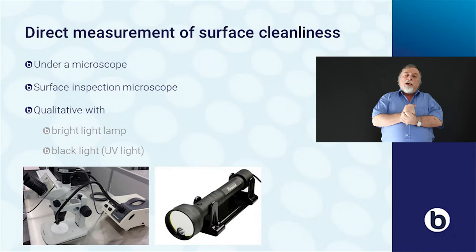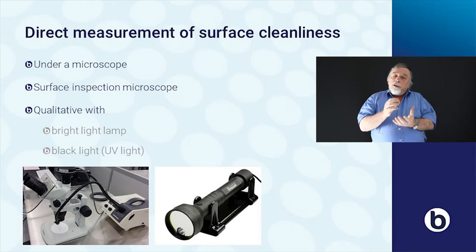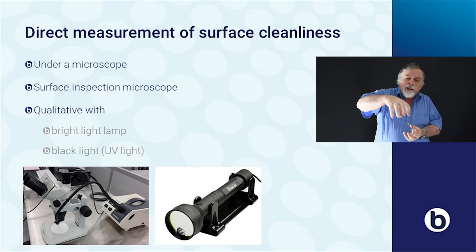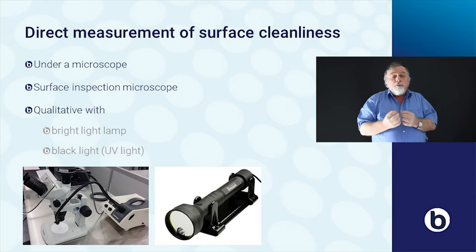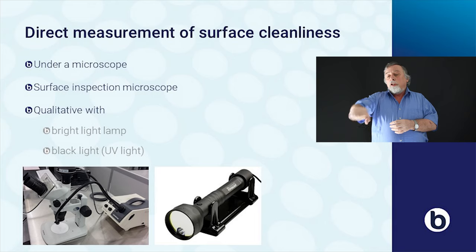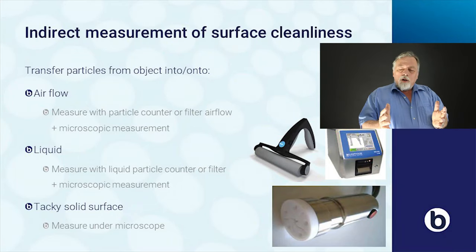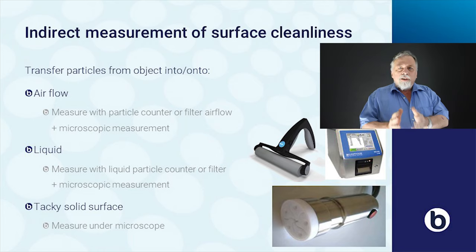There are different instruments to measure surface cleanliness directly. You can do this under a microscope or a surface inspection microscope, which you bring onto a surface, but mostly they measure only a very small area. You can also do it qualitatively using a bright light or UV light, which shows you the particles on the surface. When using microscopes, a stereo microscope is very useful for slightly larger particles, while a professional microscope is needed for very small particles. Large surfaces, flat surfaces, and complicated shapes are very difficult to measure directly.